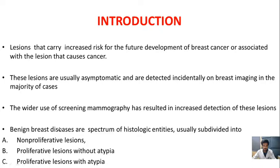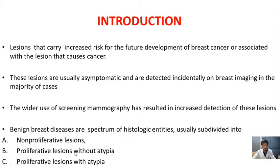These lesions are usually asymptomatic and are detected incidentally on breast imaging in the majority of cases. However, the wide use of screening mammography has resulted in increased detection of these lesions. The benign breast diseases are classified on the spectrum of histology which is subdivided into non-proliferative disease lesions, proliferative lesions without atypia, and proliferative lesions with atypia.